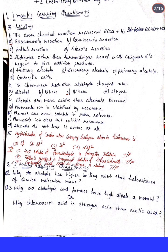Let us start from the paper. This is the Plus Two chemistry bimonthly examination. The first MCQ: which chemical reaction represents RCOCl + H2 over palladium-barium sulfate to form aldehyde + HCl? The options are: (a) Rosenmund reduction reaction, (b) Cannizzaro reaction, (c) Kolbe's reaction, (d) Etard reaction. The correct answer is Rosenmund reduction reaction.